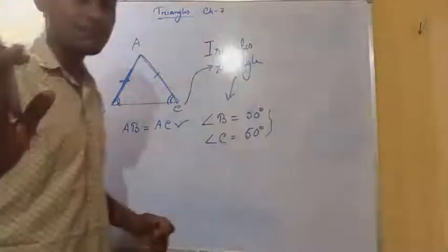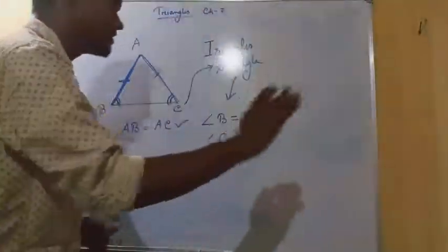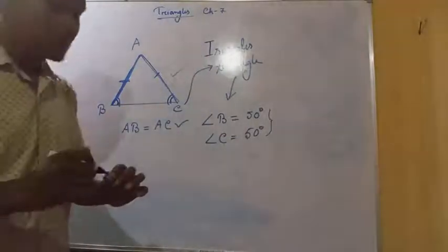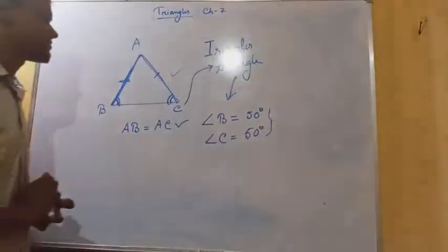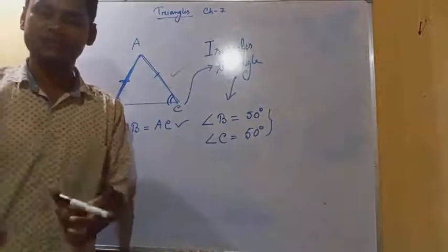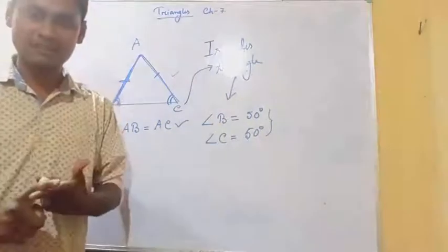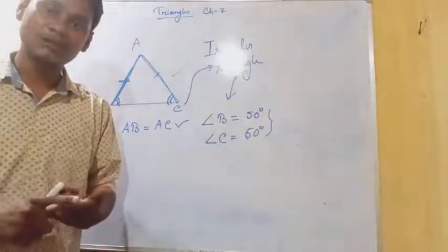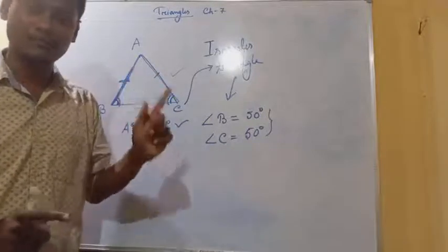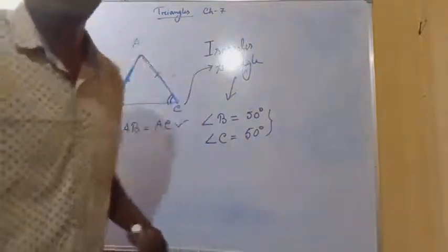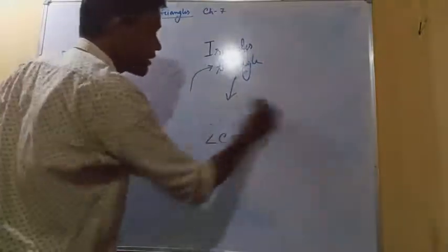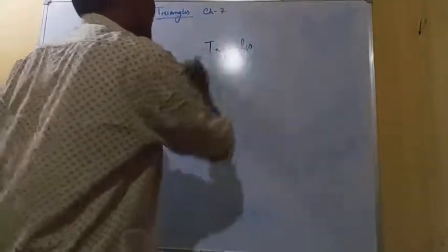This is a very important result and it exists for all isosceles triangles. This is an important property for isosceles triangles. So the theorem, stated overall, is: in an isosceles triangle, the angles opposite to equal sides are always equal. Angles opposite to equal sides of an isosceles triangle are equal.